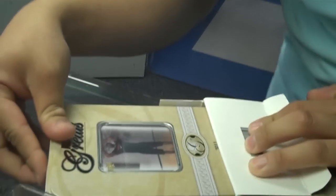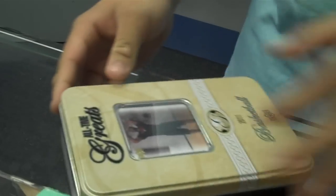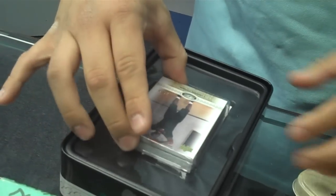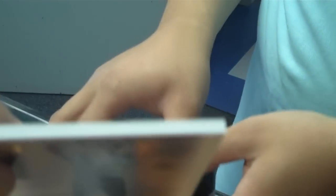LeBron James on the top. Cards are numbered out of 50. It's a thick card. Number 25 of 50, LeBron James.